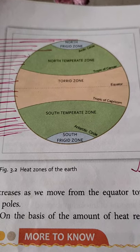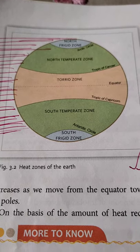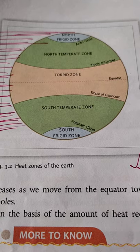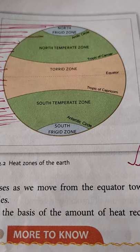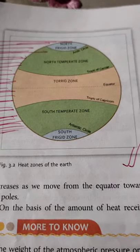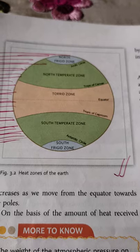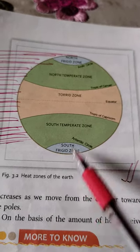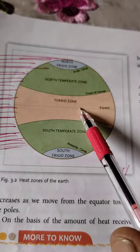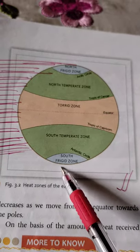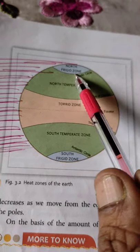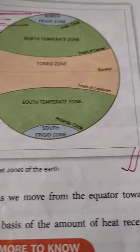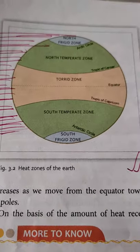Good morning students. Today we are going to look at the heat zones of the earth. As I told you in my Zoom class, we are having three zones on the earth: the torrid zone, the temperate zone, and the frigid zone. Now let's see how this happens.